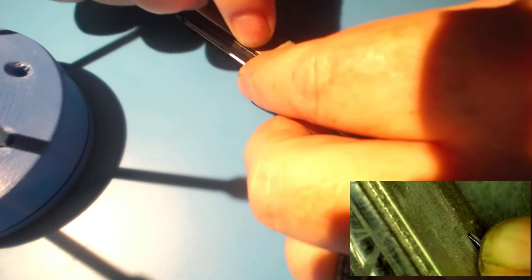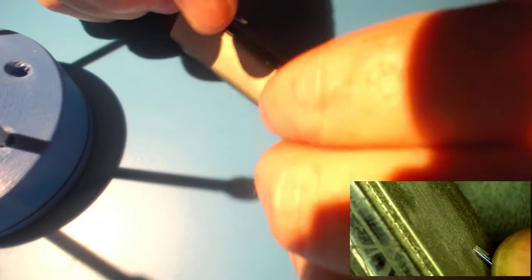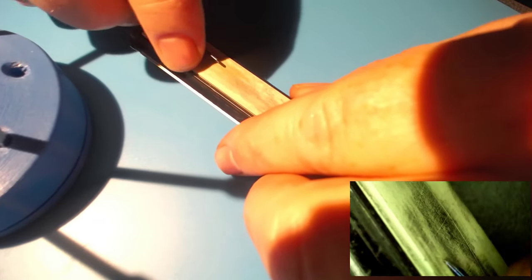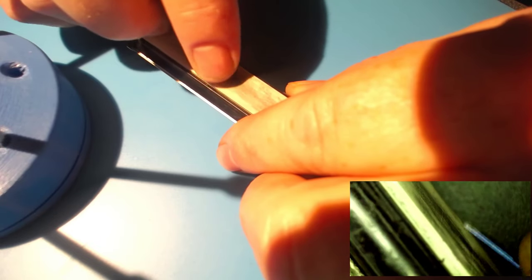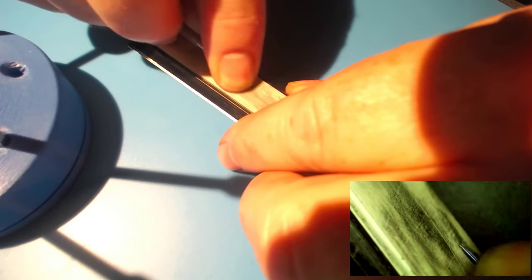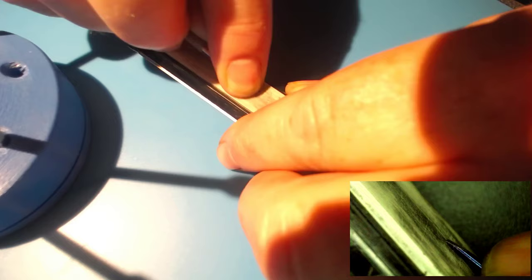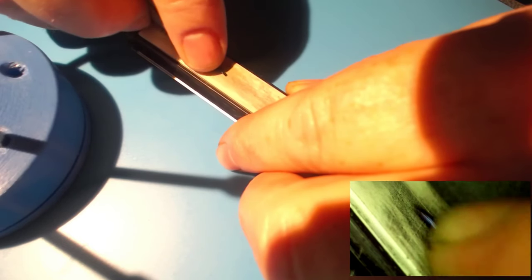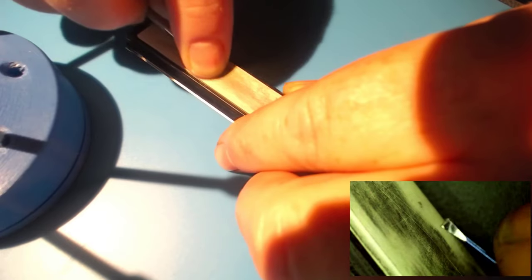You can see on this smaller screwdriver it takes a little bit more finesse to make sure that it's staying flat along the edge of that stone. Then you also on these small ones want to hold it down as close to the tip as possible because they're so small it's possible that it could break and it's possible that you bend it.